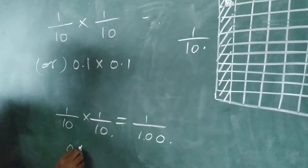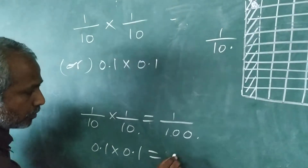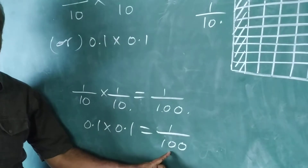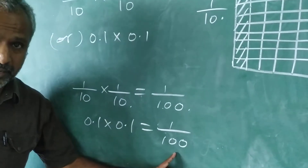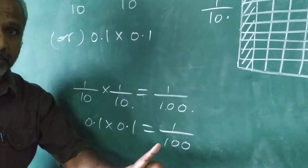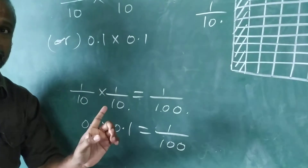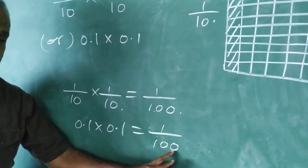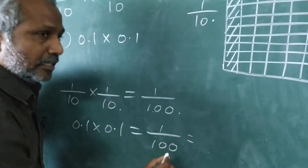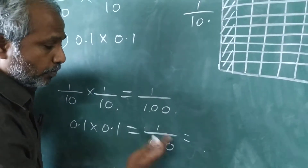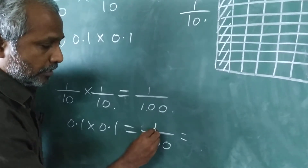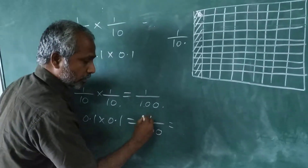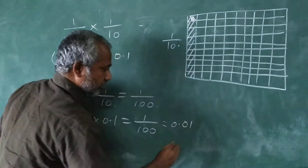Otherwise, we write it: 0.1 into 0.1 equals 1 by 100. Whenever we are dividing by 10, 100, or 1,000, we have to move the decimal from right to left corresponding to the number of zeros. Here, there are 2 zeros, so you take the decimal from right to left 2 places. The numerator has only 1, so the decimal will be placed 2 positions, giving 0.01 as the answer.